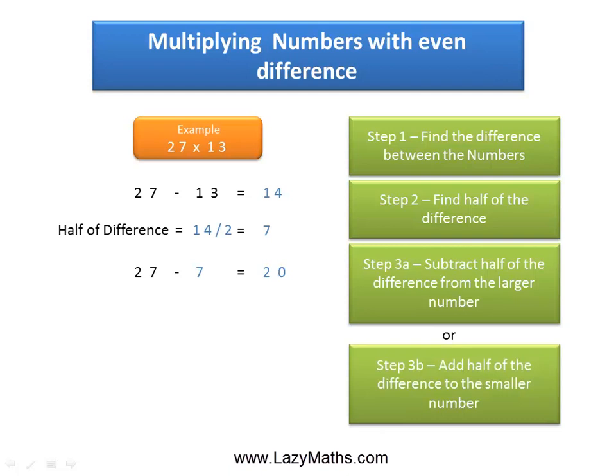Or we can alternately add the half of the difference, which is 7, to the smaller number, which is 13. So 13 plus 7 equals 20. Either way, we'll get the same answer, 20.